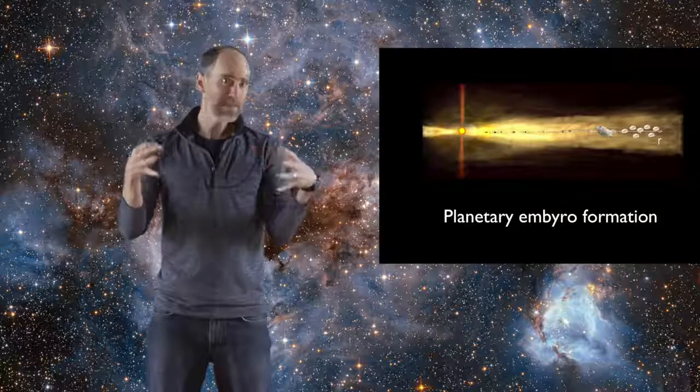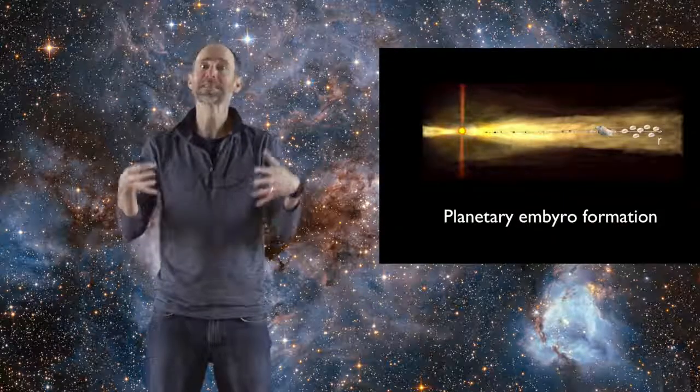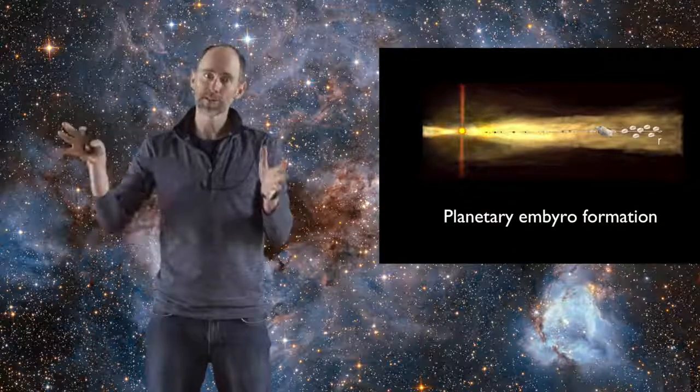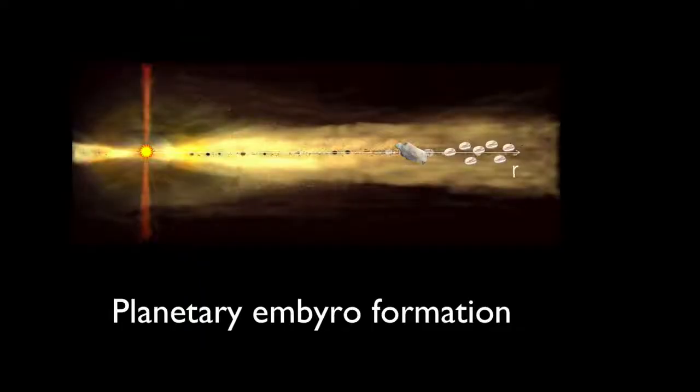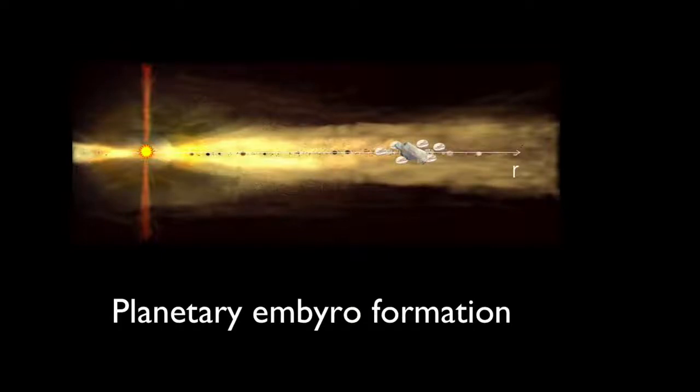Then when a large planetesimal has formed, its growth continues by grabbing onto pebbles that are drifting by. These pebbles continually drift by, and the planetesimal is able to accrete a certain fraction of those and grow into a larger body, grow into a planetary embryo.